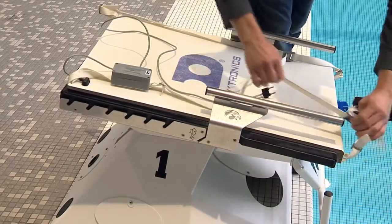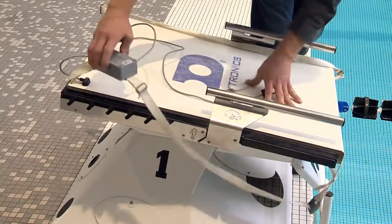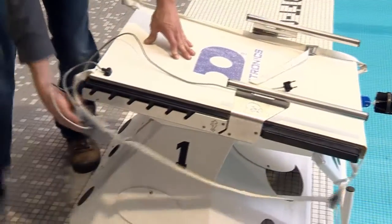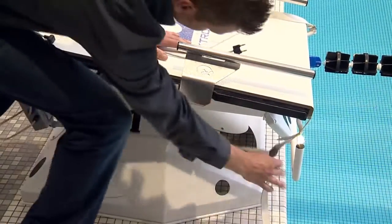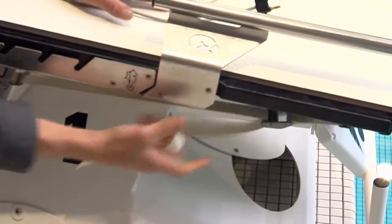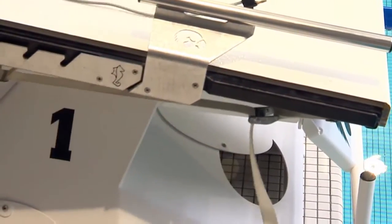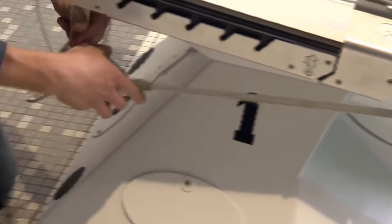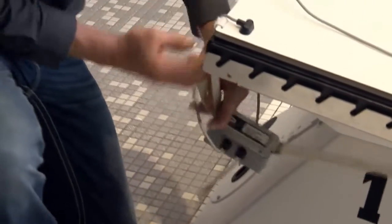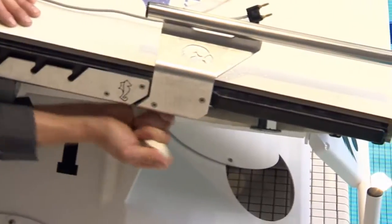The relay takeoff platforms will come with straps that can be tightened underneath the actual starting block top. Once you have things in position, you can pull the strap tight and snug it up.